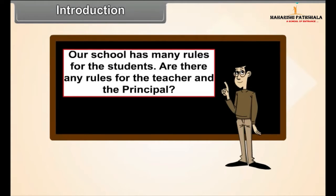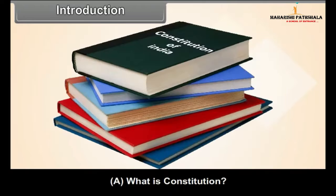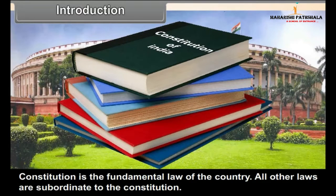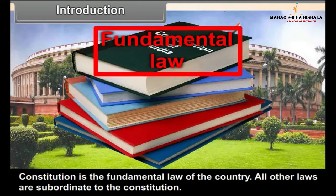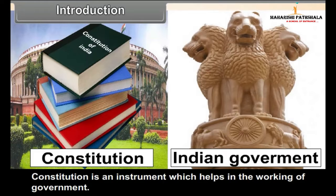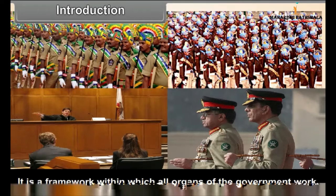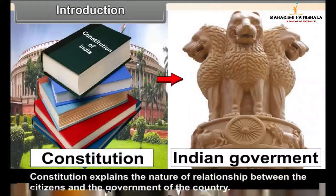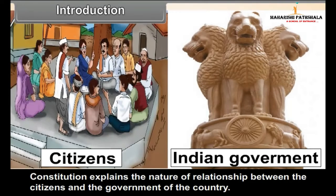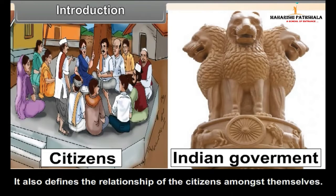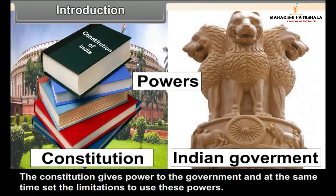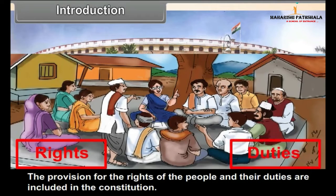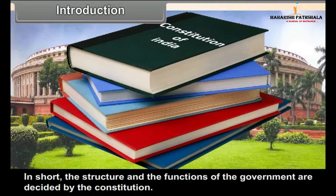Our school has many rules for students. Are there any rules for the teachers and the principal? Constitution is the fundamental law of the country. All other laws are subordinate to the constitution. It is an instrument which helps in the working of government — a framework within which all organs of the government work. The constitution helps define the nature of the relationship between citizens and the government, and also defines the relationship of citizens amongst themselves. The constitution gives powers to the government and, at the same time, sets limitations on the use of these powers. The provision for the rights and duties of the people are included in the constitution. In short, the structure and functions of the government are decided by the constitution.